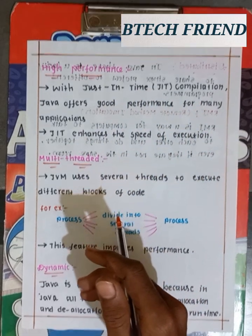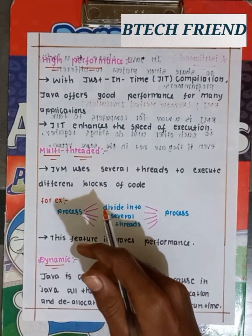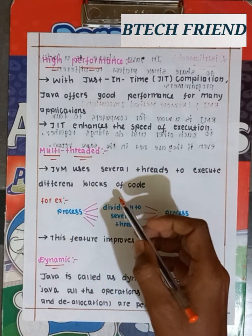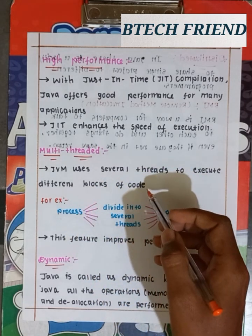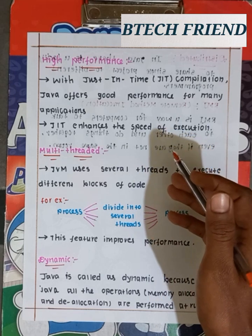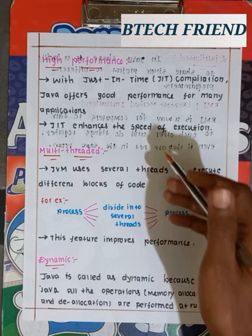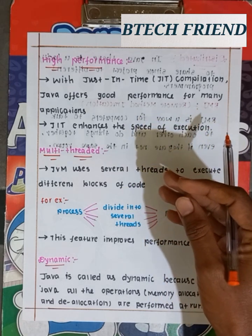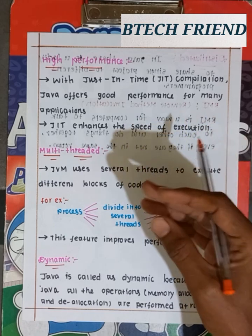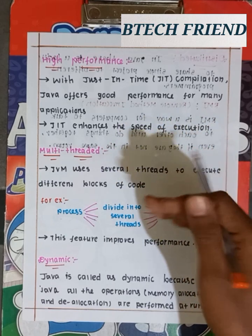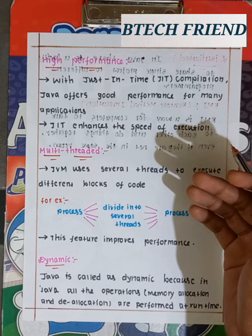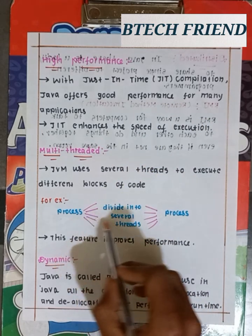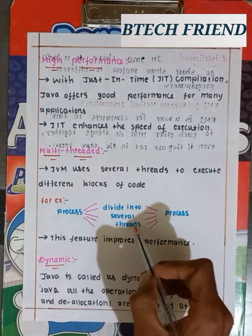The next feature is multi-threaded. JVM uses several threads to execute different blocks of code. Suppose there is a code — that code is divided into several parts, and the process is divided into several threads.